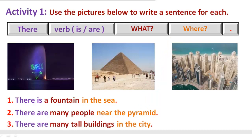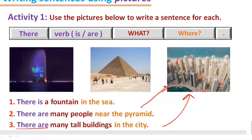Sentence number 3: There are many tall buildings in the city. In this picture we see there are many tall buildings. As it is a plural number, we have to use 'there are'. There are many tall buildings — and where are they? In the city. There are many tall buildings in the city.